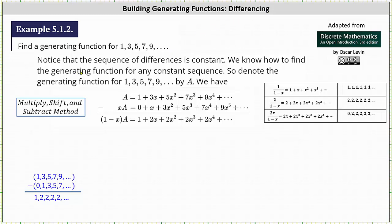To begin, notice the sequence of first differences is constant. Three minus one is two, five minus three is two, seven minus five is two, nine minus seven is two, and so on. We know how to find a generating function for any constant sequence, which is why the technique of differencing is a good choice here.